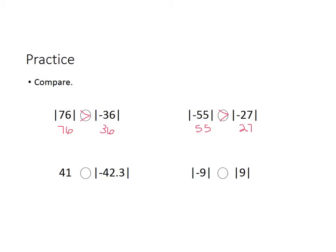Next: 41 is just plain old 41, and the absolute value of −42.3 is 42.3. So 42.3 is greater than 41. Then, the absolute value of −9 is 9, and the absolute value of 9 is 9. In this case, both of these absolute values have the same amount — they're the same distance away from 0.